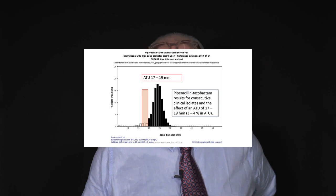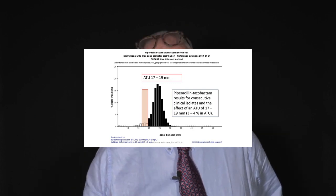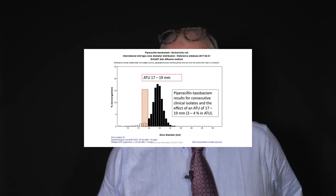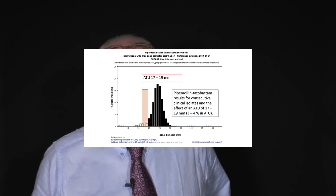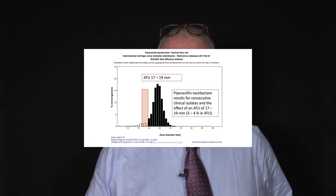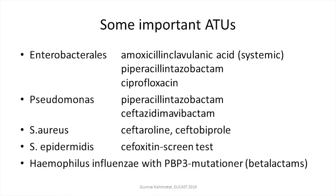EUCAST introduces an ATU from 17 to 19 millimetres for the piperacillin-tazobactam disk diffusion test, or an MIC of 16. What it tells you is that if you end up in that area, you should take steps to ascertain the correctness of that test value and interpretation. In everyday life this will affect maybe 3 to 4 percent of your isolates, depending on where in the world you are. Some of the more important ATUs introduced in the 2019 table are: amoxicillin-clavulanic acid and piperacillin-tazobactam for Enterobacteriales; ciprofloxacin in the area of 0.25–0.5 mg/L; Pseudomonas for piperacillin-tazobactam and for ceftazidime-avibactam; and Staphylococcus aureus for ceftaroline and ceftobiprole.